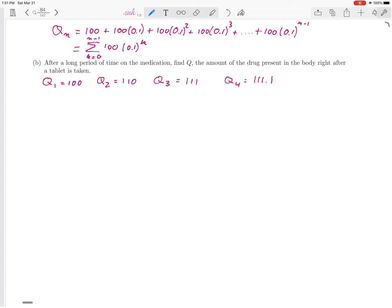The question, what happens after a long amount of time, really is asking for a limit. It's the same idea that we've seen in this class before. So Q can be expressed as the limit as n goes to infinity of Qn.